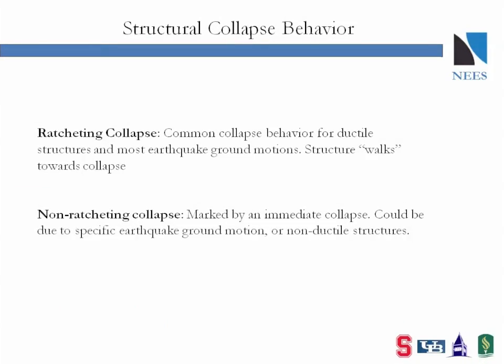Moving on to our discussion of collapse behavior, the focus of the video will be to demonstrate ratcheting-type collapse. Ratcheting collapse commonly occurs with more ductile structures associated with particular ground motions. As you'll see shortly, the structure will almost appear to walk towards collapse during the earthquake. On the other hand, non-ratcheting-type collapse could occur with large pulse-type ground motions or even with non-ductile structures.